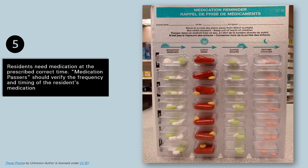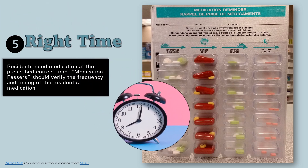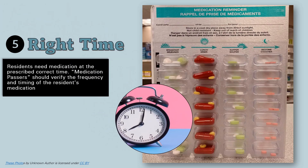The fifth right is right time. Residents need medication at the prescribed correct time. Medication passers should verify the frequency and timing of the resident's medication.